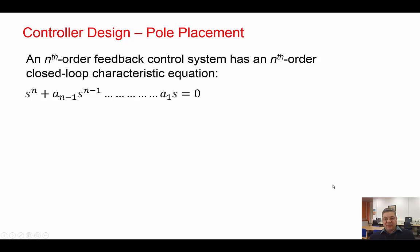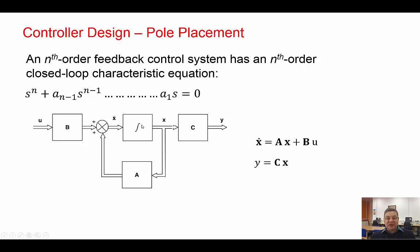Pole placement is the simplest and you can visualize it very clearly. We know if we have a system of order n, the n-order system will have n poles and also will have n state variables. The characteristic equation will be of order n and the state space representation will be in the form shown.